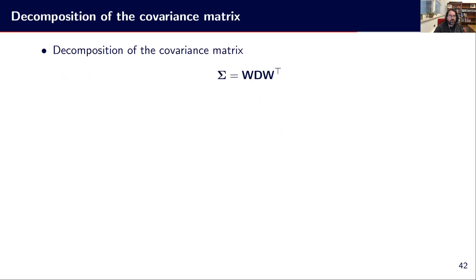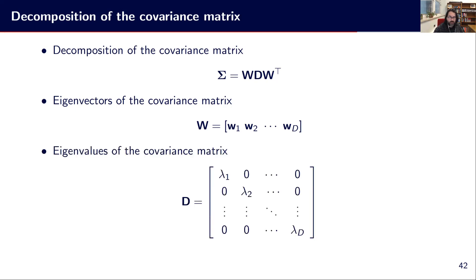Now let's decompose the covariance matrix that way. We have eigenvectors of the covariance matrix as W_1, W_2 up to W_d. Then we have the eigenvalues of the covariance matrix. Basically D equals all the eigenvalues corresponding to the eigenvectors.